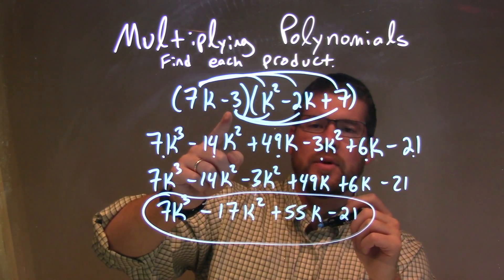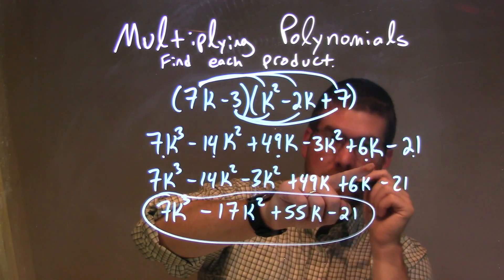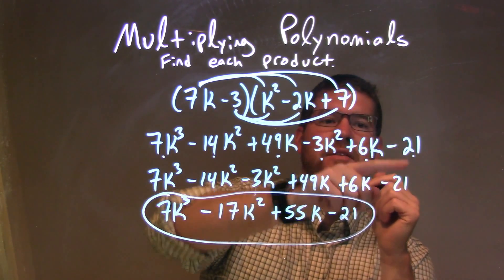We add minus 3 now, so minus 3 times k squared is minus 3k squared, minus 3 times minus 2k is a positive 6k, and minus 3 times 7 is minus 21.